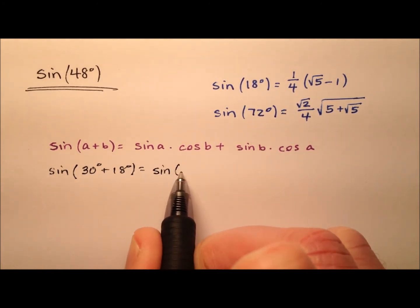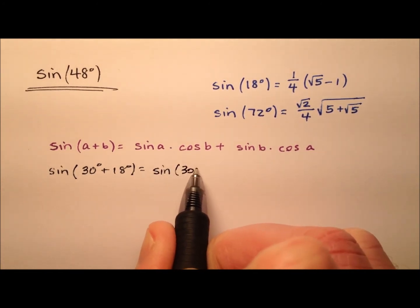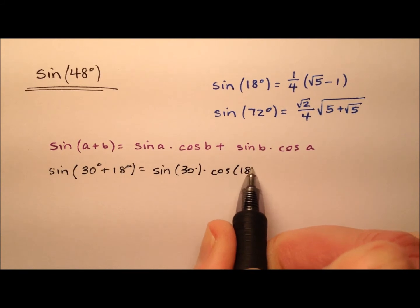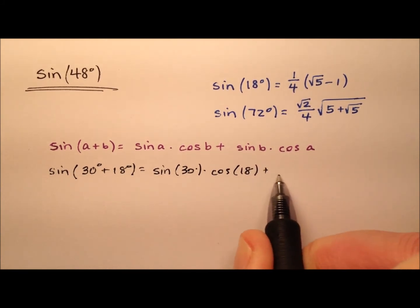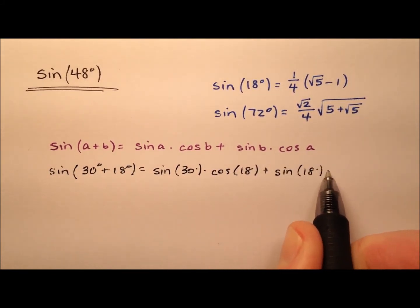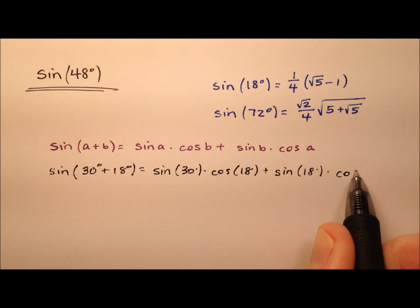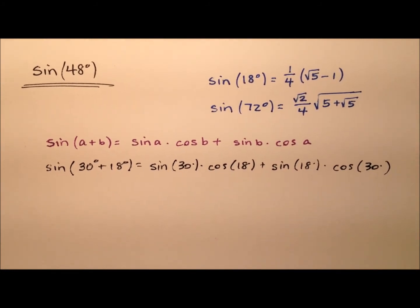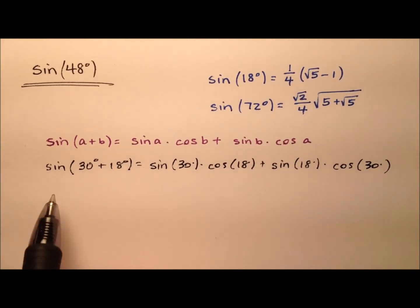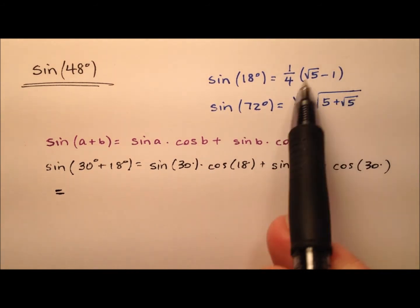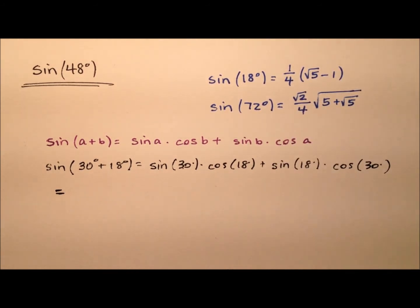It'll be the sine of 30 degrees times the cosine of 18 degrees, plus the sine of 18 degrees times the cosine of 30 degrees. A lot of these values are pretty nice — in fact, the 30-degree values for sine and cosine are not bad at all.